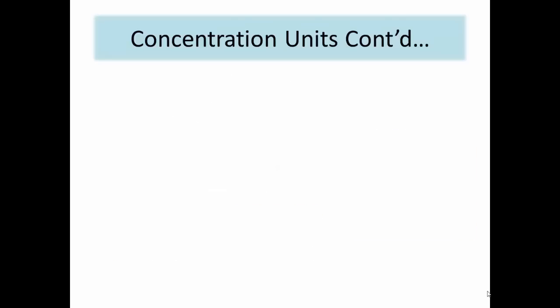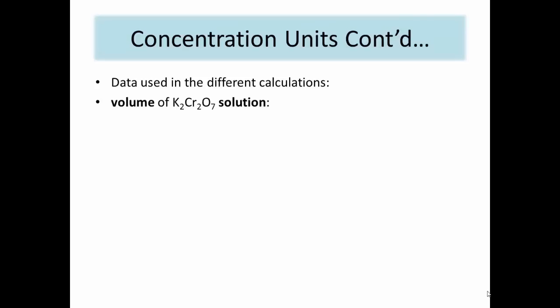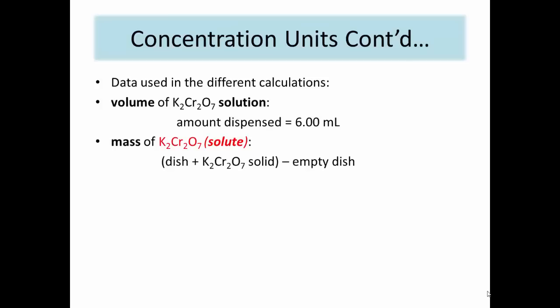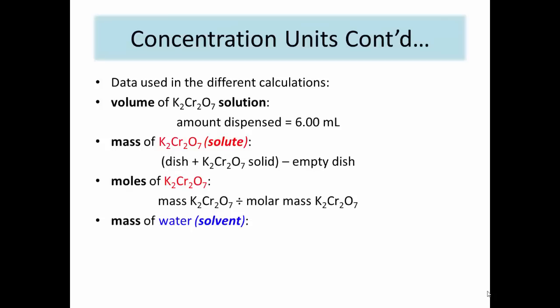The following data must be obtained in order to complete Part A calculations. First, the volume of potassium dichromate solution obtained. Second, the mass of solid potassium dichromate remaining after evaporation. Third, the molar mass of potassium dichromate — this can be found in the CRC Handbook. Fourth, the calculated moles of potassium dichromate remaining in the evaporating dish. Fifth, the mass of solvent in the potassium dichromate solution obtained.